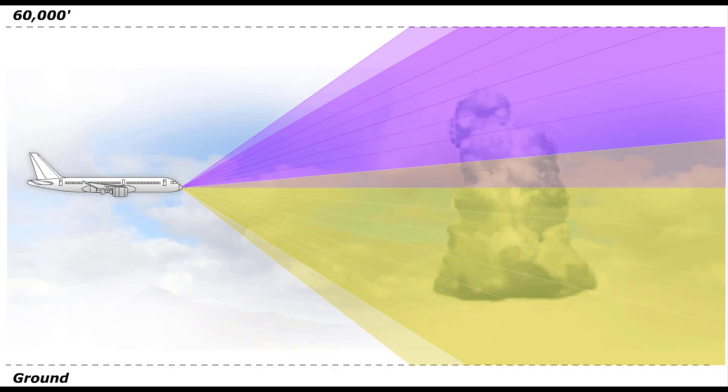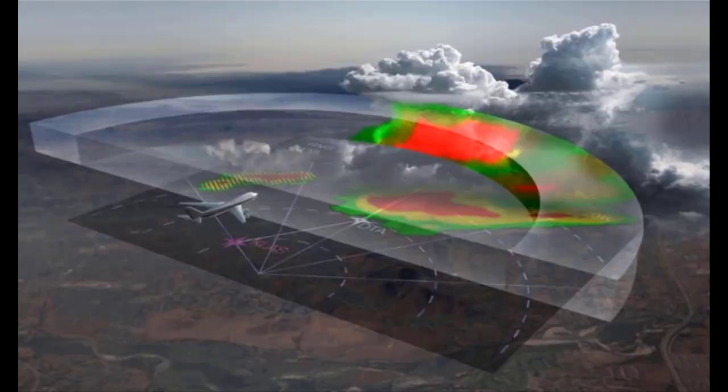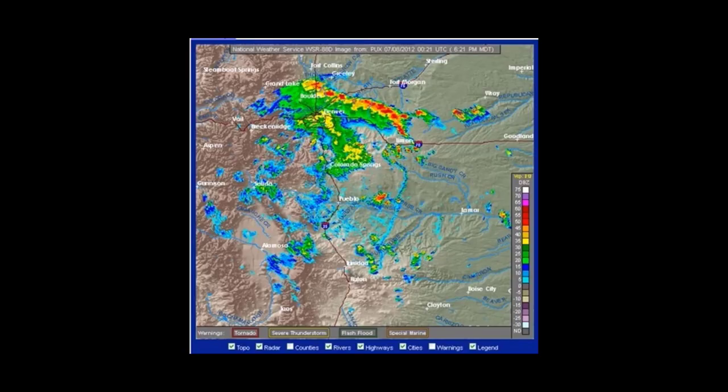Most inadvertent turbulence encounters, especially at night, are due to less reflective frozen storm tops. The RDR 4000 does several things to make these cells more visible. First, in the collection process, gain is increased when scanning at higher altitudes. Second, the floor of the flight path envelope never goes above 25,000 feet for convective weather. Third, what is displayed is the maximum reflectivity at any point from the lower envelope boundary to 4,000 feet above the aircraft's altitude.